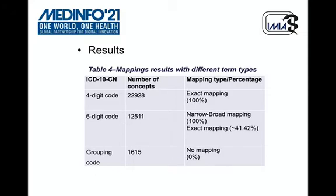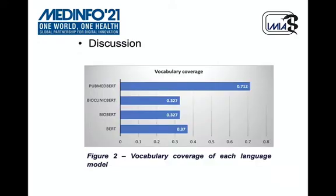A summary of the mappings between these two terminologies is also shown in Table 4. The 1,615 codes represent group names of terms which cannot find any appropriate SNOMED CT concepts.